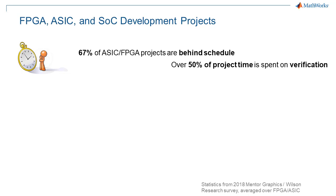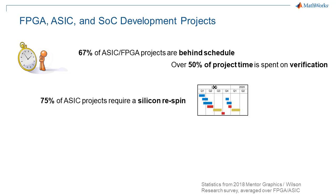Most commonly for ASIC it's actually 60-70%, while FPGA is about 50-60%. And even with all that effort, 75% of ASIC projects still require a re-spin, which has direct costs in millions of dollars, but even worse can cause your schedule to slip by months.